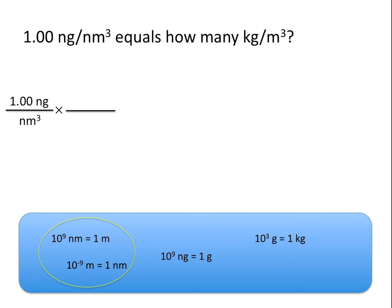A nanometer is a very, very small unit of measure. There are 10 to the ninth nanometers in every one meter. Likewise, sometimes you'll see this written as 10 to the negative ninth meters equal to one nanometer. These conversion factors are equal, so it doesn't matter which one you use. I'm going to use 10 to the ninth nanometers for every one meter. We have nanometers cubed on the bottom and nanometers on the top, which allows us to cancel only one unit of nanometers. Writing the conversion factor again, we now have nanometers squared on top, canceling two units of nanometers.